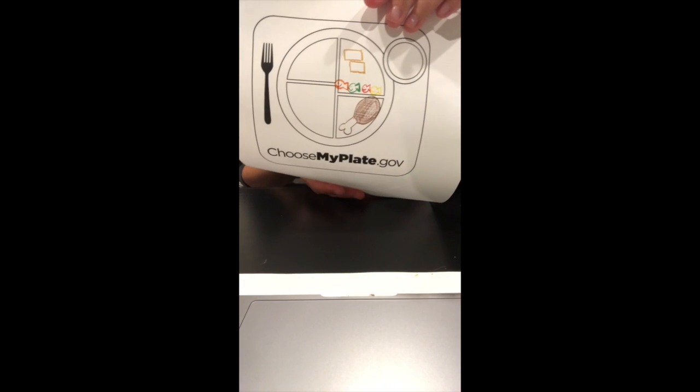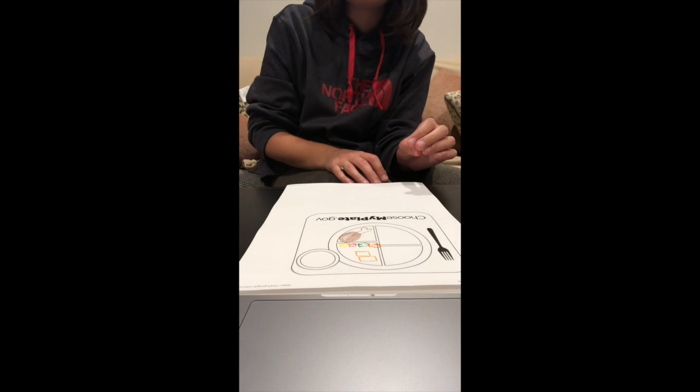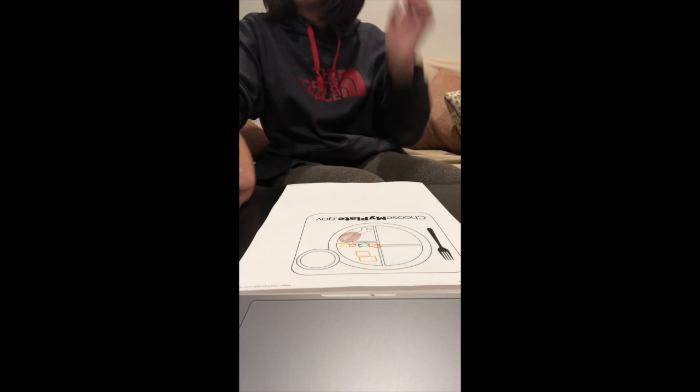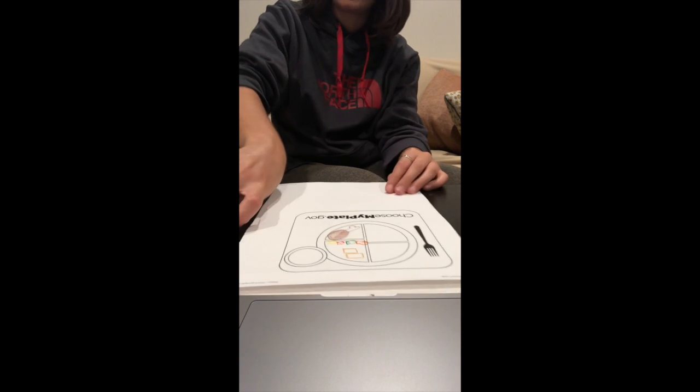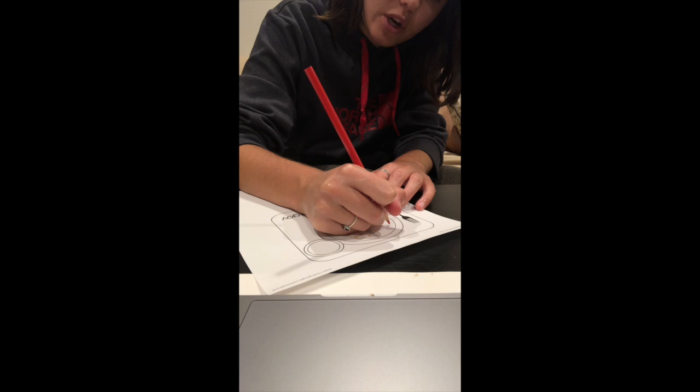Okay. Now that we have our little fishies, our bread, and our chicken. So we have our grains and we have our protein. And now we're going to do the fruit. And I'm going to draw some strawberries for that because I really like strawberries.